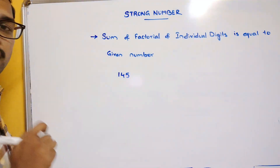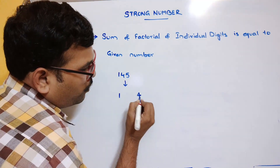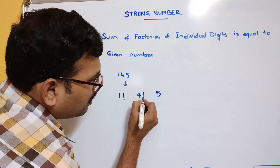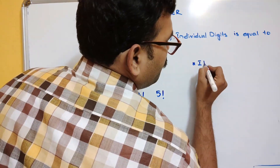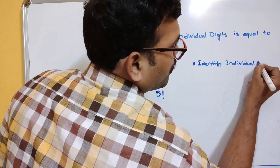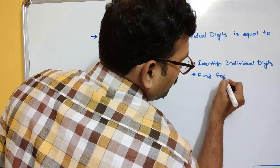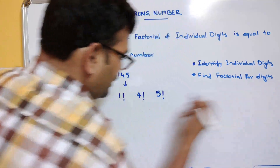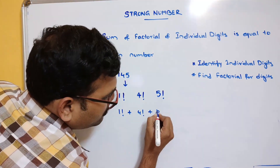For example, consider 145. We need to check whether 145 is a strong number or not. The individual digits are 1, 4, and 5. First we need to find the individual digits, then apply the factorial: 1 factorial, 4 factorial, and 5 factorial. So the first step is to identify individual digits, the second step is to find the factorial for each digit.